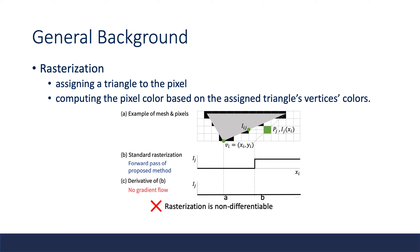In the rasterization step, we first assign a triangle to a target pixel, then compute the pixel color based on the assigned triangle's color. Take this figure, for example: say we want to rasterize this gray triangle. For pixel pj, we consider its color when moving the x-coordinate of vertex vi. When we move xi from a to b, the color of pj will suddenly transition from 0 to the color of the triangle, and unfortunately that means the gradient is 0.